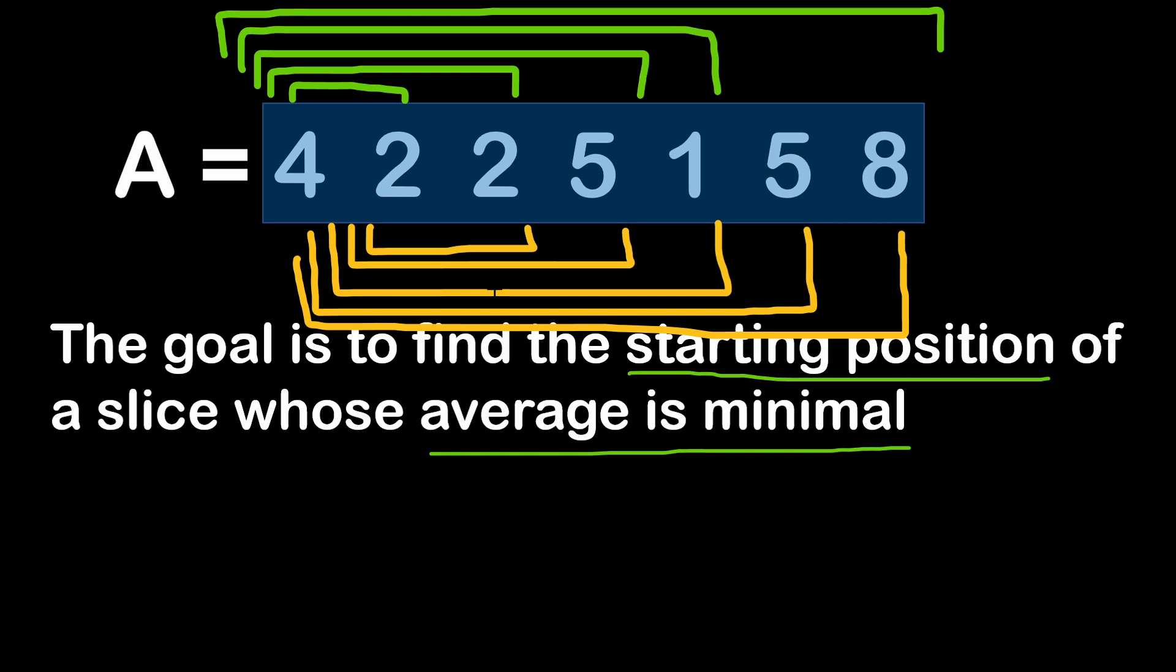Always keeping in a variable somewhere the minimal average that we have found, and the starting position of the related slice. If we proceed this way, the solution that we have just described uses a brute approach, in the sense that we are testing all the possible slices of the array. So you have to have two embedded for loops, and while this solution will give you a correct answer, it's not efficient enough to score 100% on this task.